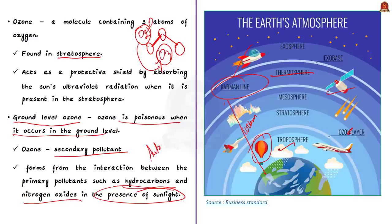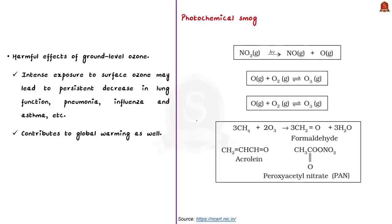The harmful effects of ground level ozone include decreased lung function, increased susceptibility to pneumonia and influenza, worsening of asthma, and other respiratory problems. It may also cause the temperature of the atmosphere to rise, acting as a greenhouse gas, and thus contributes to global warming.